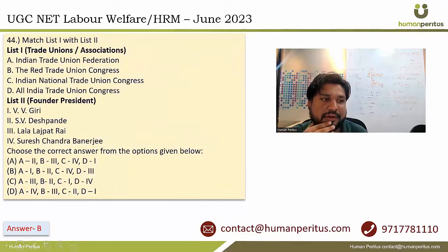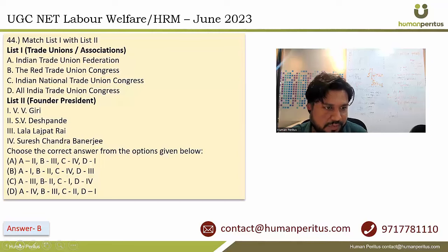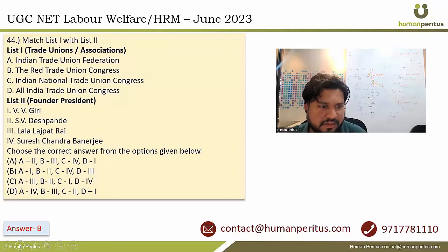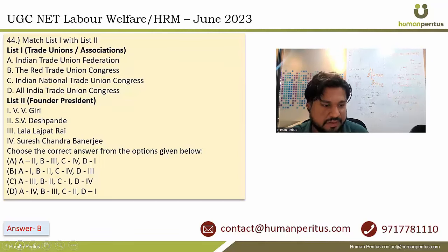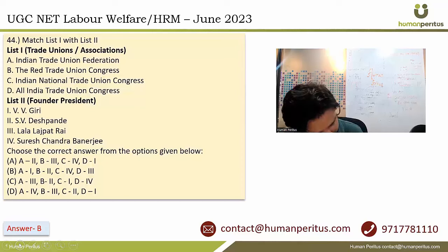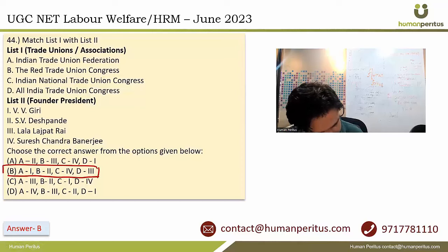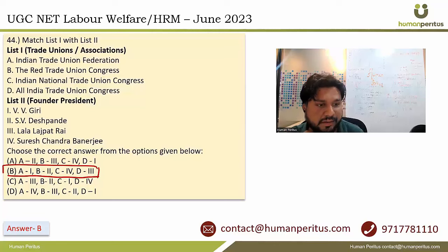Next is a match-the-column question. It is a factual question and the correct answer is option B: A matches with 1, B with 2, C with 4, and D with 3.